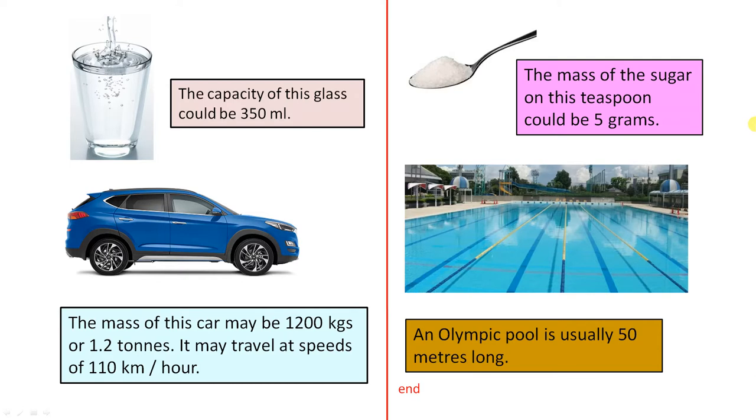The mass of sugar on this teaspoon could be 5 grams. If you're using a tablespoon, the mass would be larger.